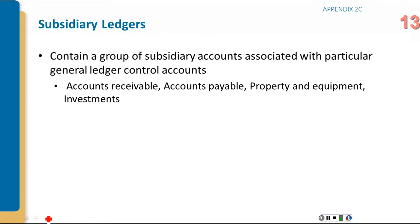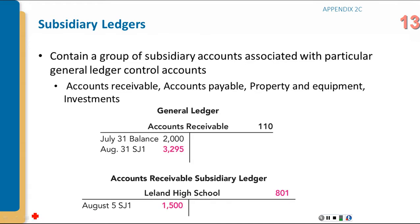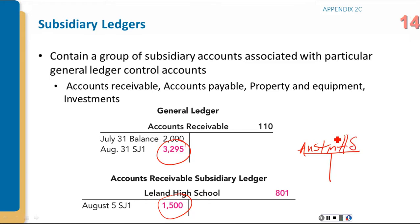The subsidiary ledger might exist for accounts receivable and accounts payable. For instance, Leland High School might owe $1,500, but the total accounts receivable balance of $32.95 hundred is larger, indicating there are other customers in the subsidiary ledger such as Austin High School or Athens High School. All those individual balances together make up the total, which transfers into the primary accounts receivable account in the general ledger. The same applies to accounts payable and other accounts.